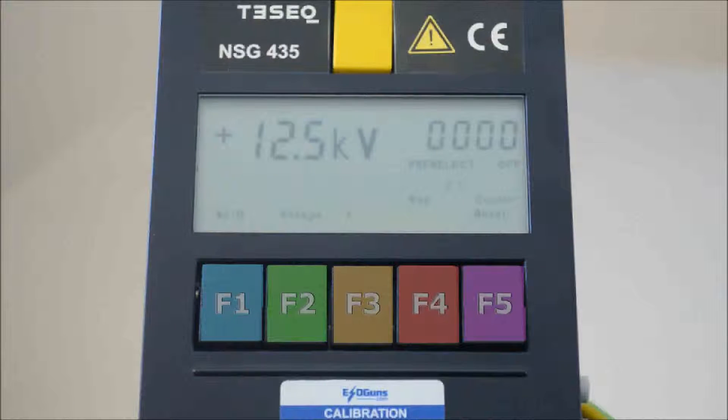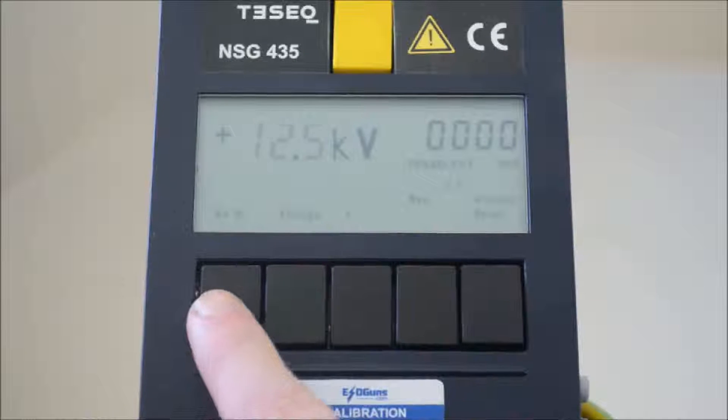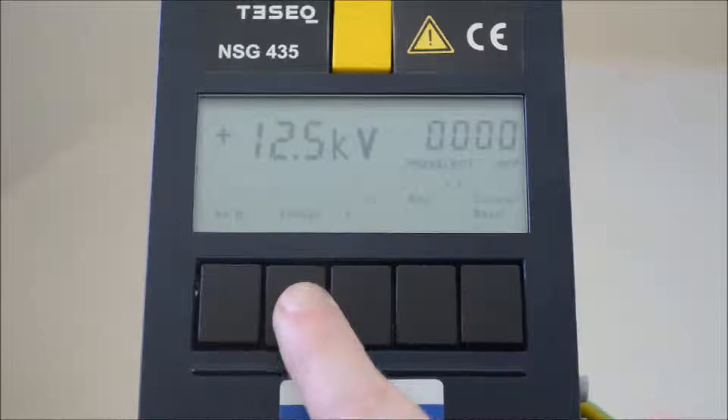F1 is used to toggle between air and contact discharge mode. The unit will not allow us to enter contact mode when the voltage is set to anything over 9 KV.